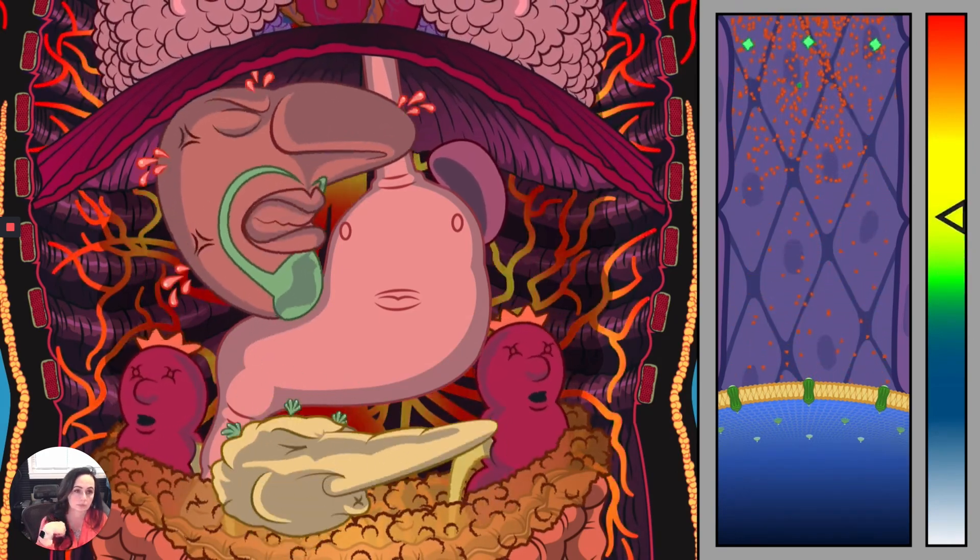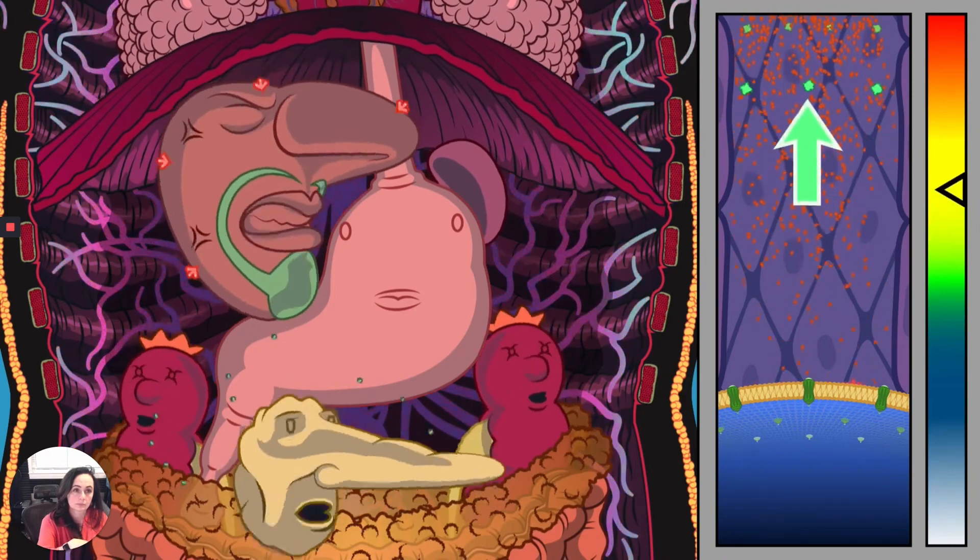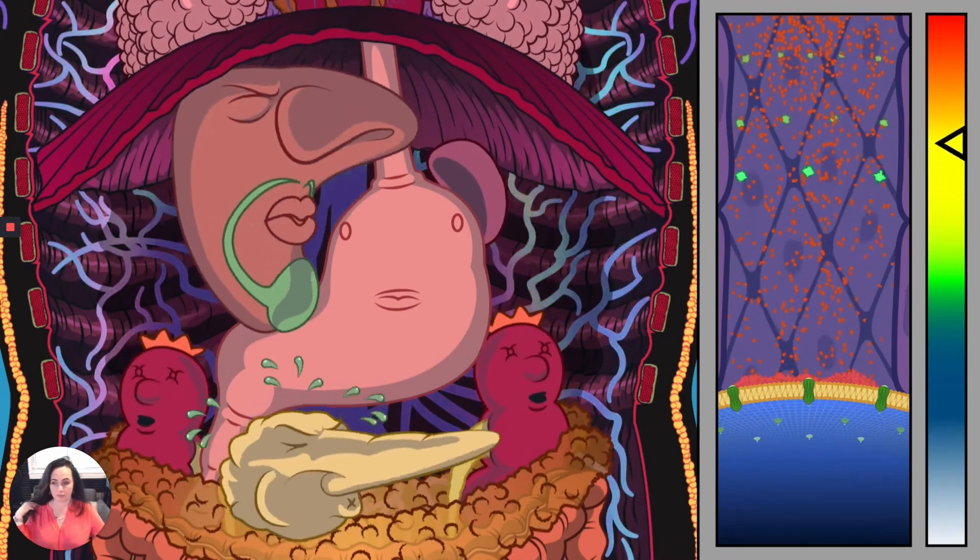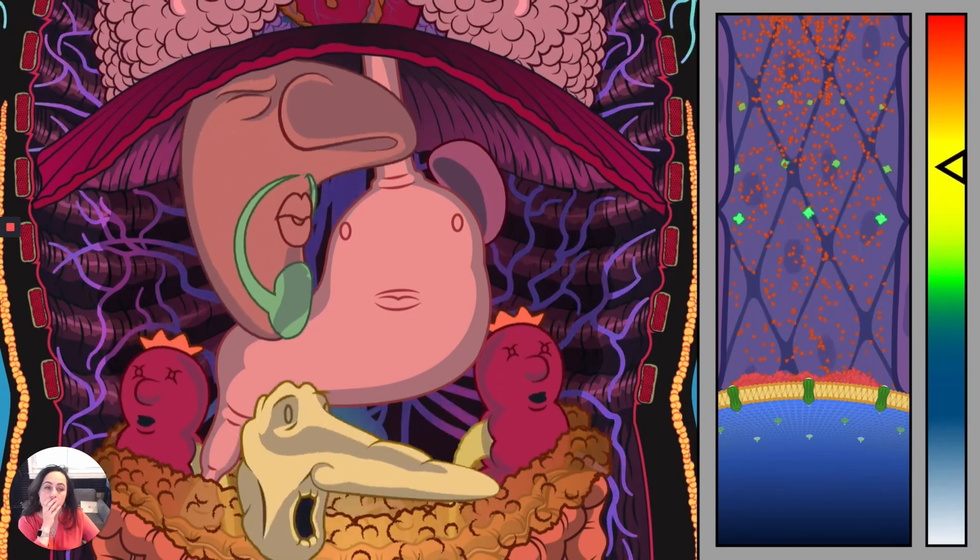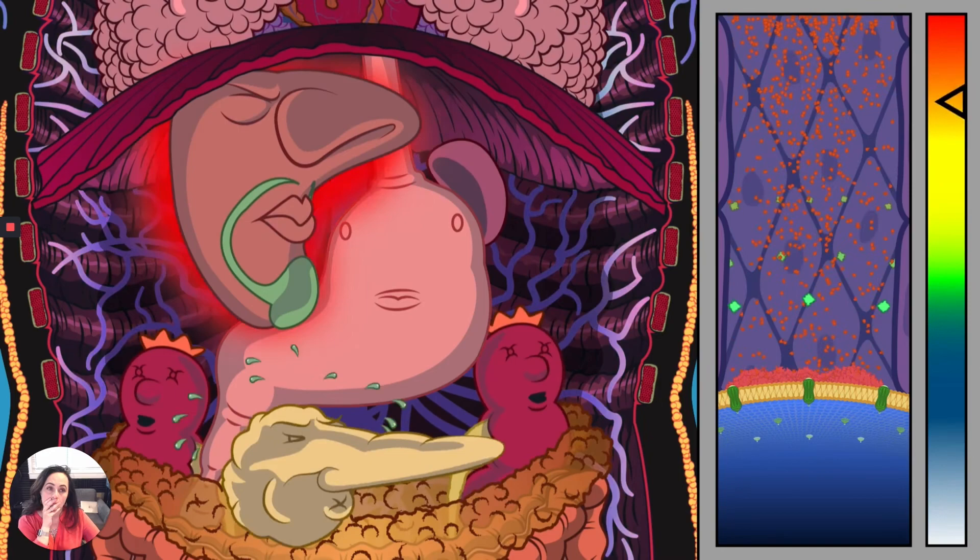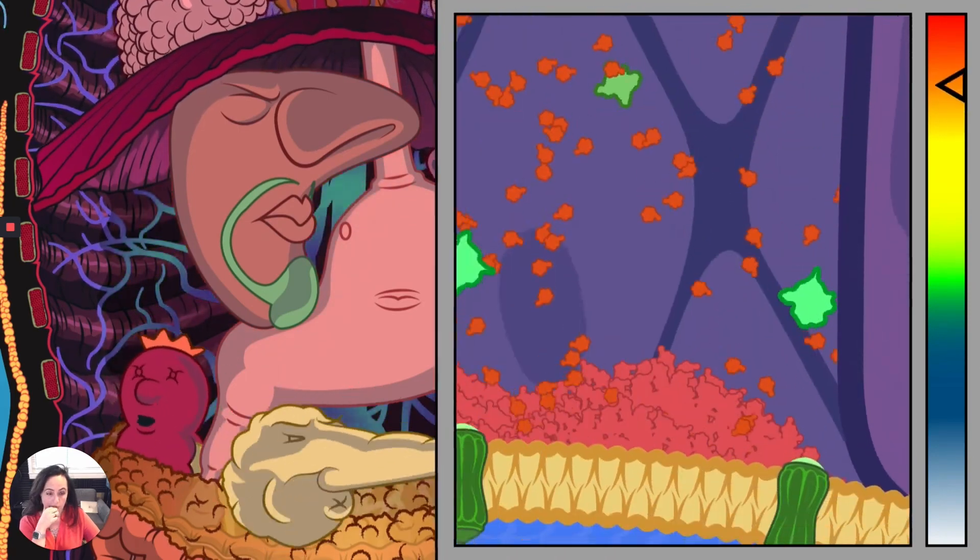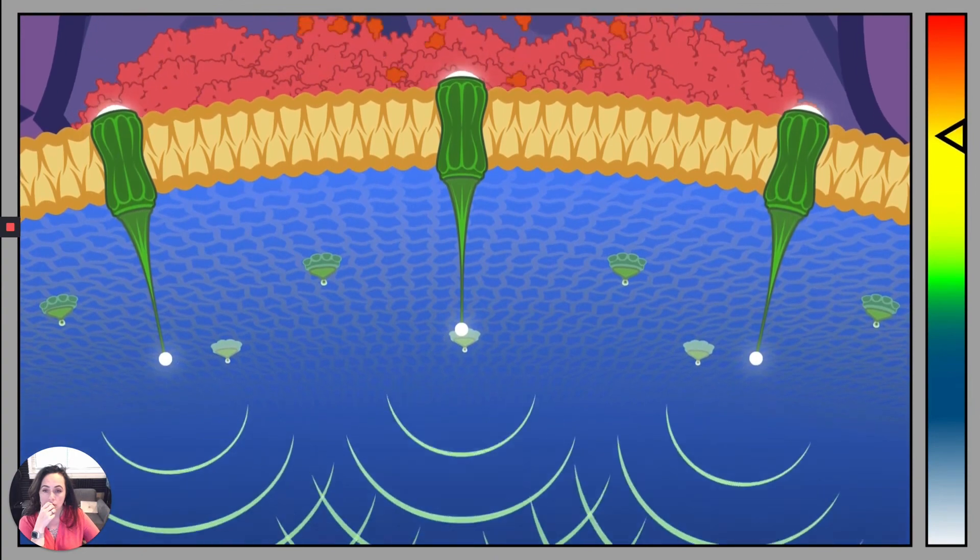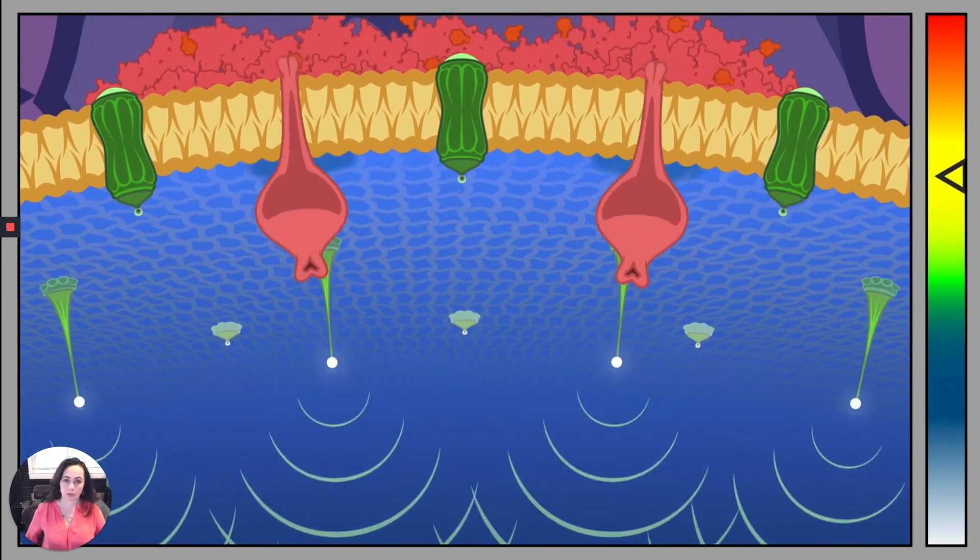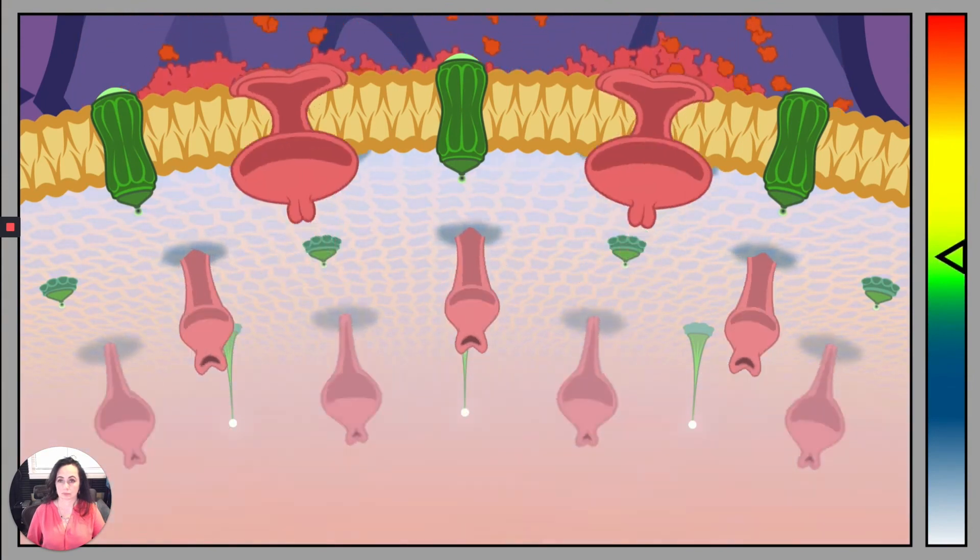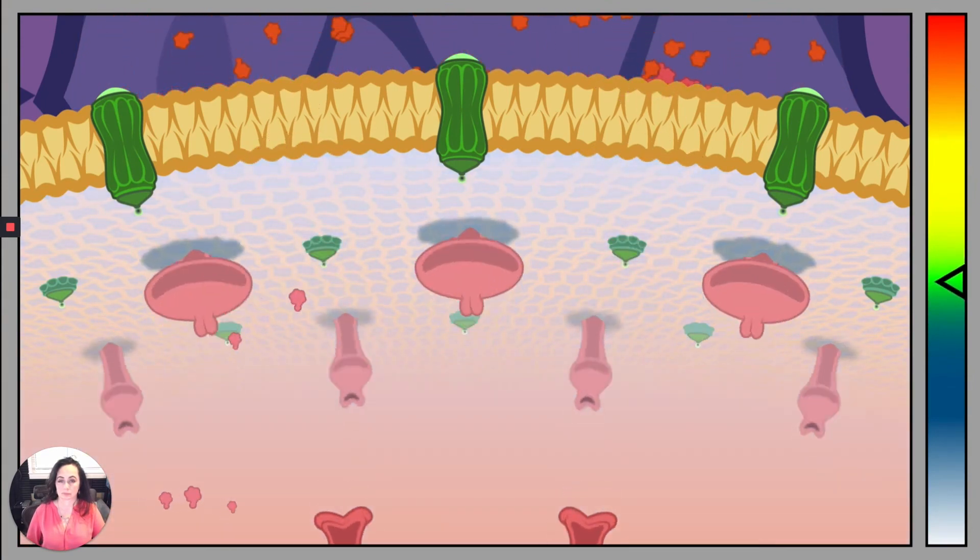Insulin travels to organs and tissues throughout the body, telling them that there's plenty of available blood sugar to use as fuel. Insulin tells the liver to stop releasing sugar and instead to start storing it. Insulin tells muscle and fat cells to bring sugar channels to their surface. Now they can take up sugar from the bloodstream and either burn it for energy or store it to use later.